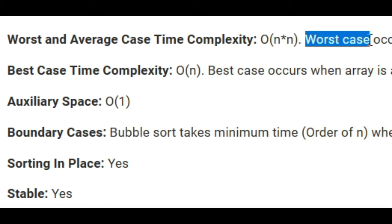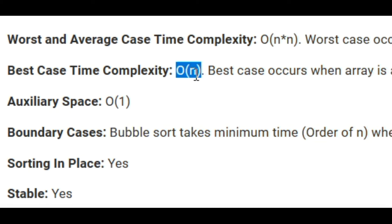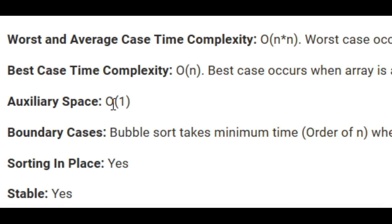The worst case is when the array is in reverse sorted order — for example, if we wanted lowest to highest and it was sorted highest to lowest. The best case is when we only have to make one pass through the list, assuming we're using the most efficient version of bubble sort that checks if the list is already sorted. The best case occurs when the list is already sorted. Auxiliary space is order one, meaning there is some constant amount of extra memory used that does not depend on the size of the list — it depends on the size of any particular value, because we need a temporary variable to perform the swap.